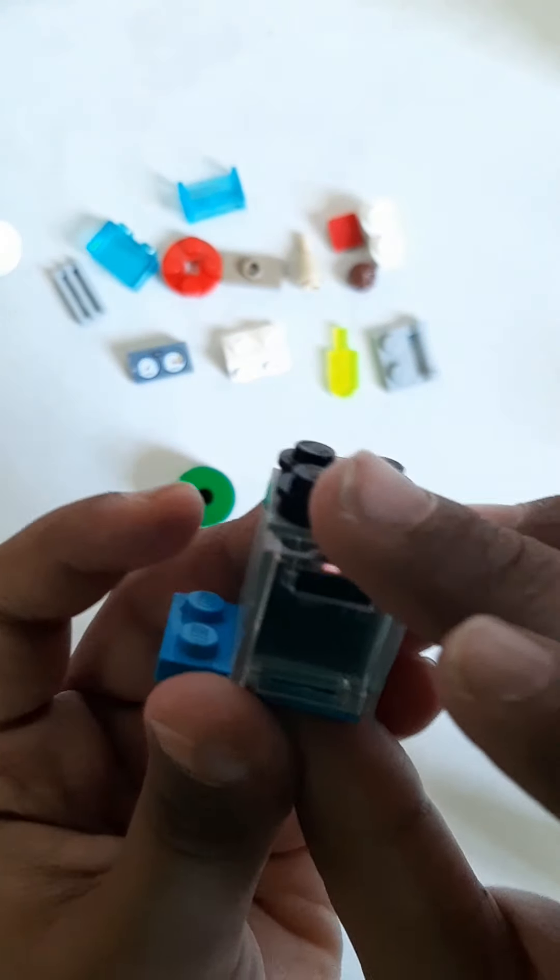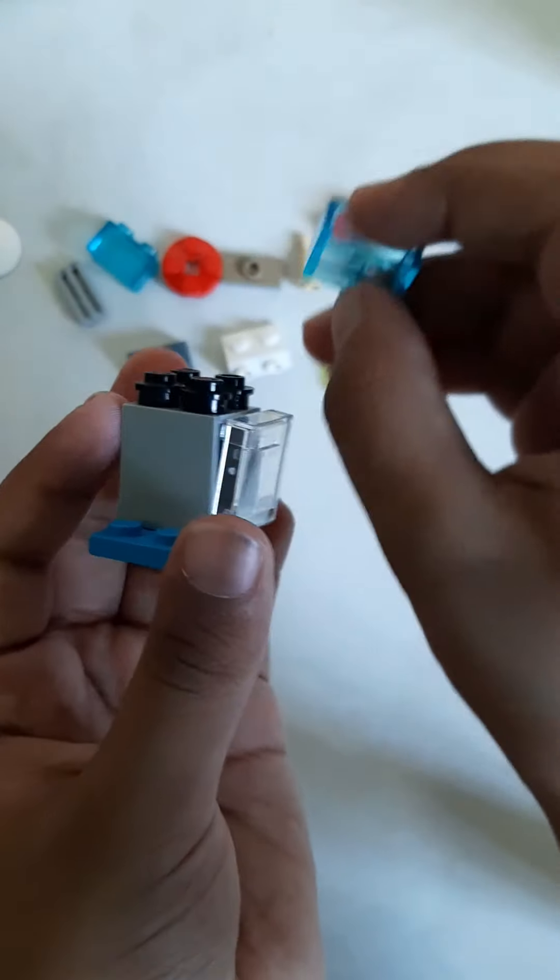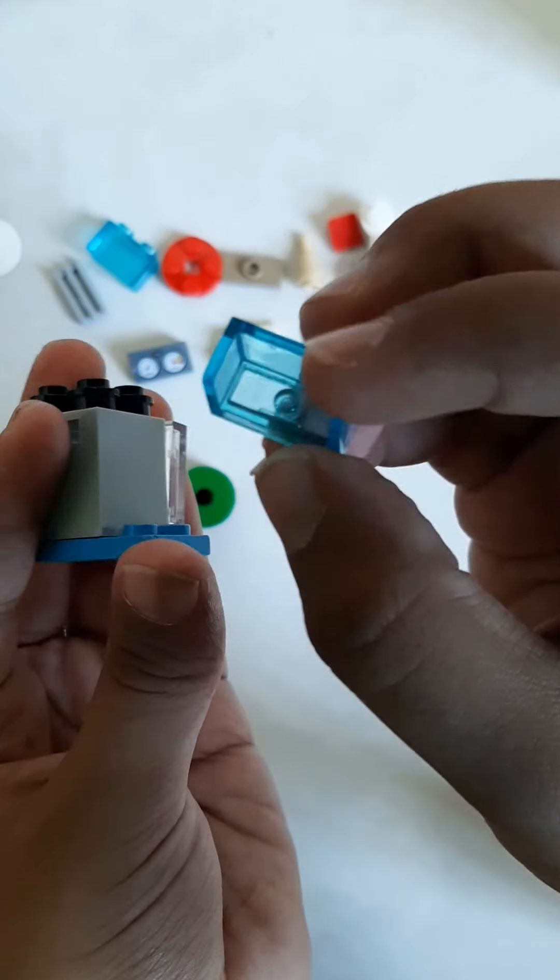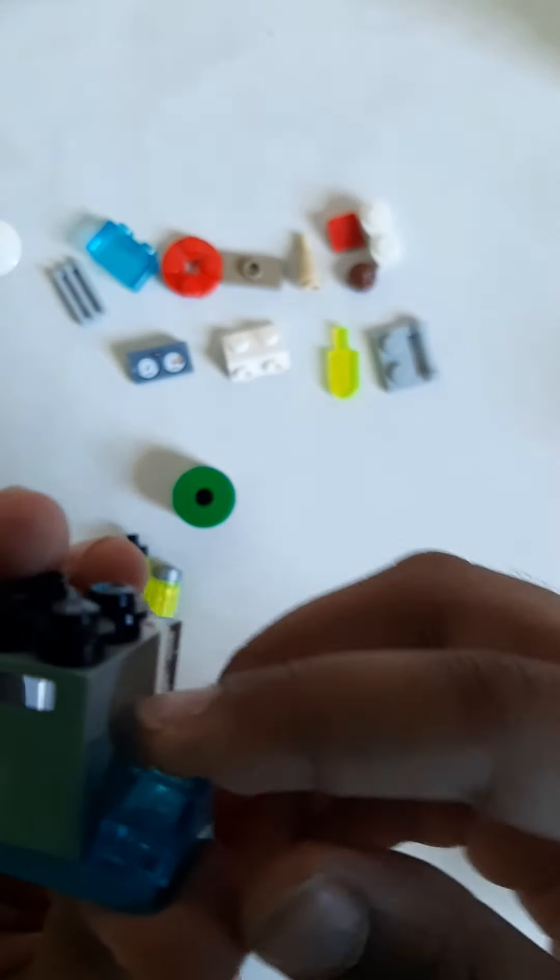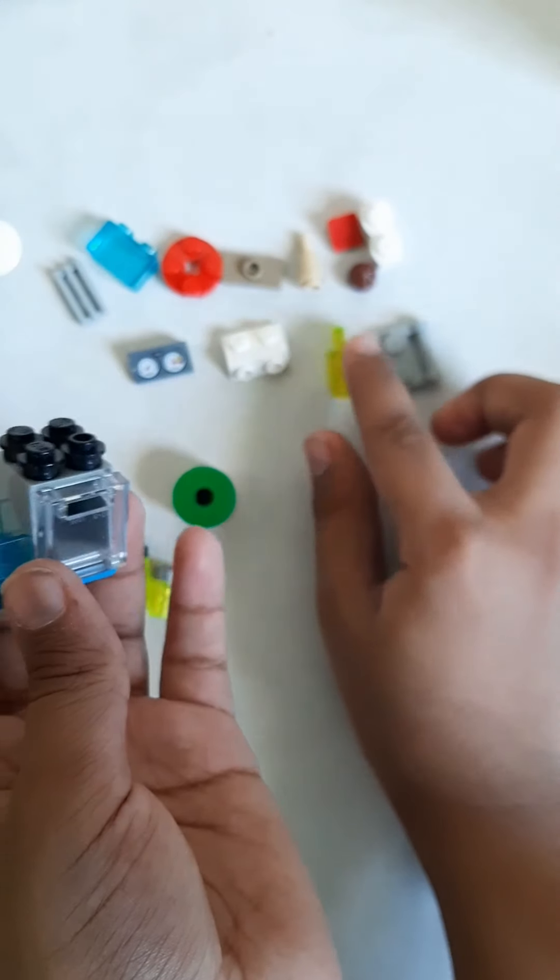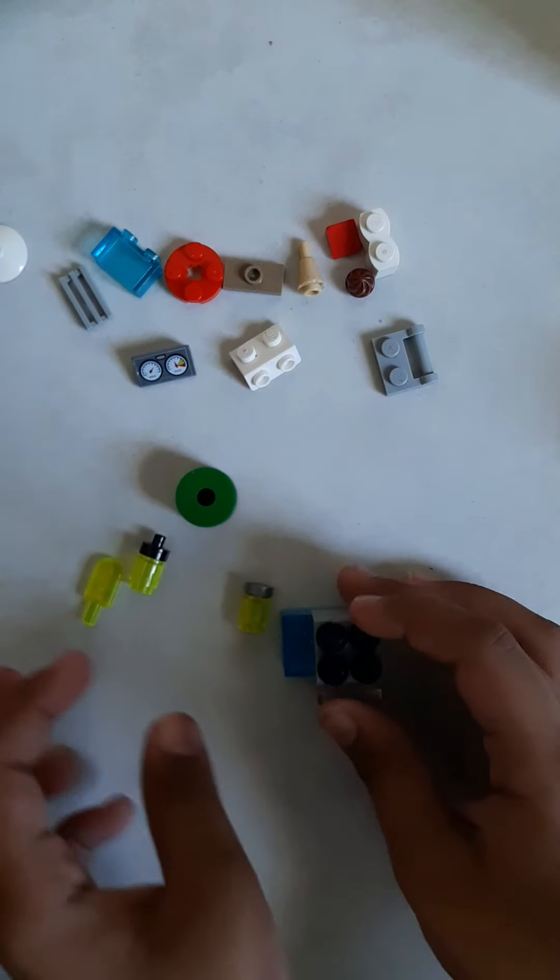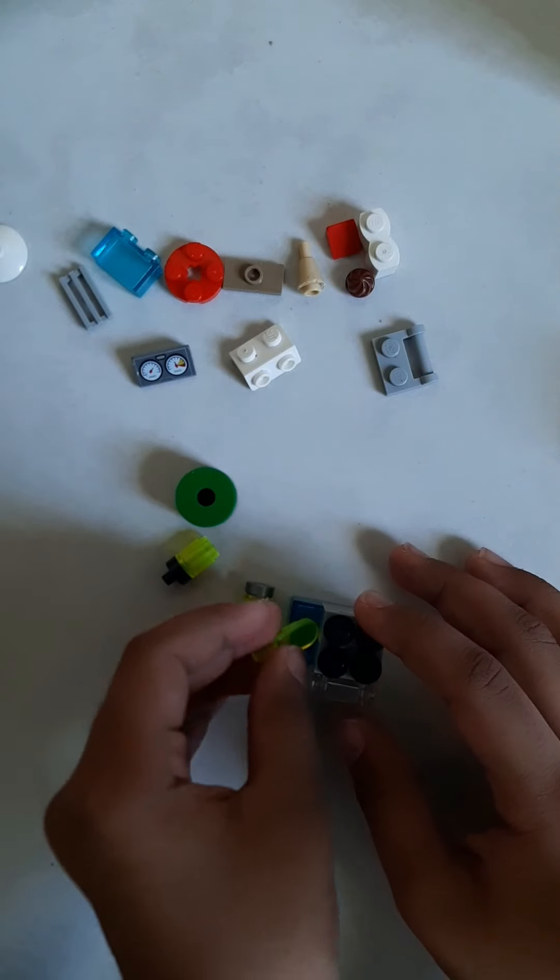We need this two by three flat piece. Attach it right under so there's one row sticking out. We need this bar, I think you find this in the ice cream truck set. You have to attach it like this, so now it's like an attachment on the side. We need anything you can put in there that fits. My brother decided ice cream.